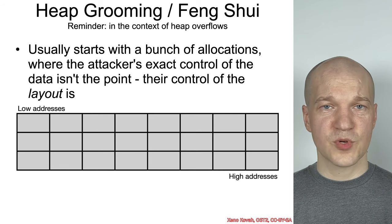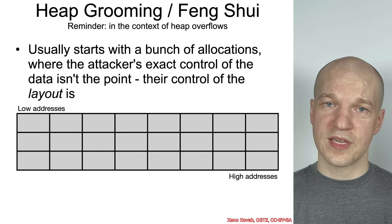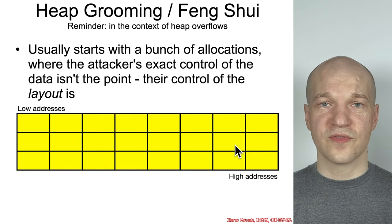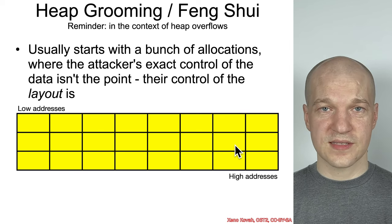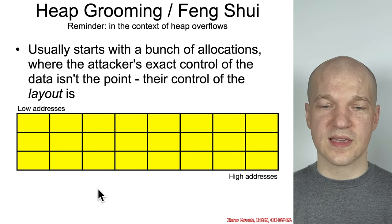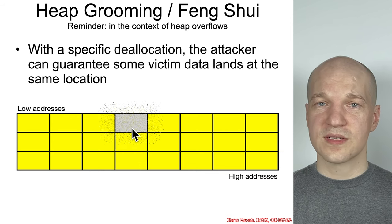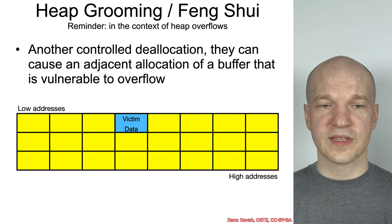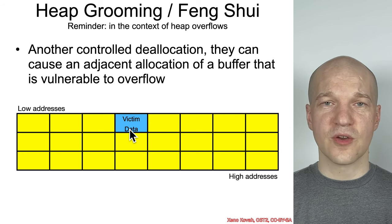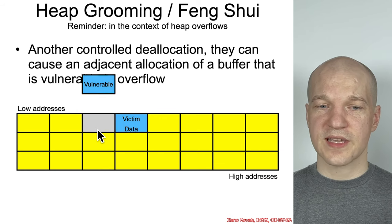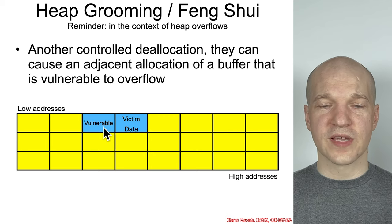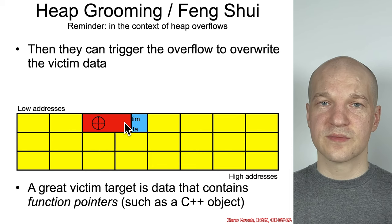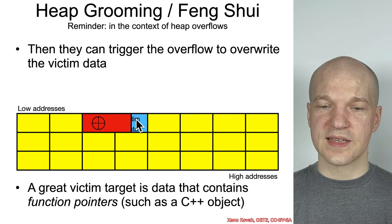I want to quickly contrast heap grooming and heap feng shui in the context of the original heap overflows versus OODA access. In the original scenario, the attacker would set these yellow values — things they didn't necessarily control, but were just trying to influence the filling of the heap. Then they would cause a selective deallocation to create a gap, let the victim allocation fill in the gap, and then cause an adjacent deallocation of some vulnerable buffer they know they can overflow. When they eventually overflow the vulnerable buffer, it will overflow into the victim data, which will subsequently be using ACID instead of the clean data.